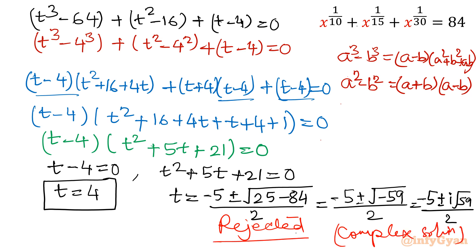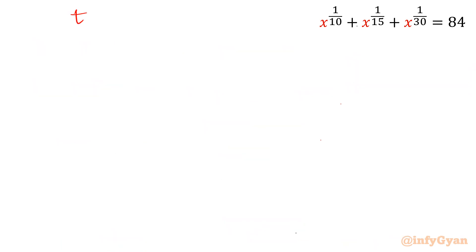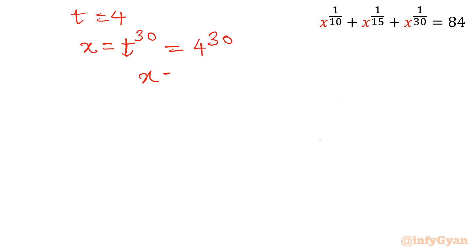The accepted solution is t equals 4. Recalling our substitution, x equals t to the power 30. Since t equals 4, x will be equal to 4 to the power 30.